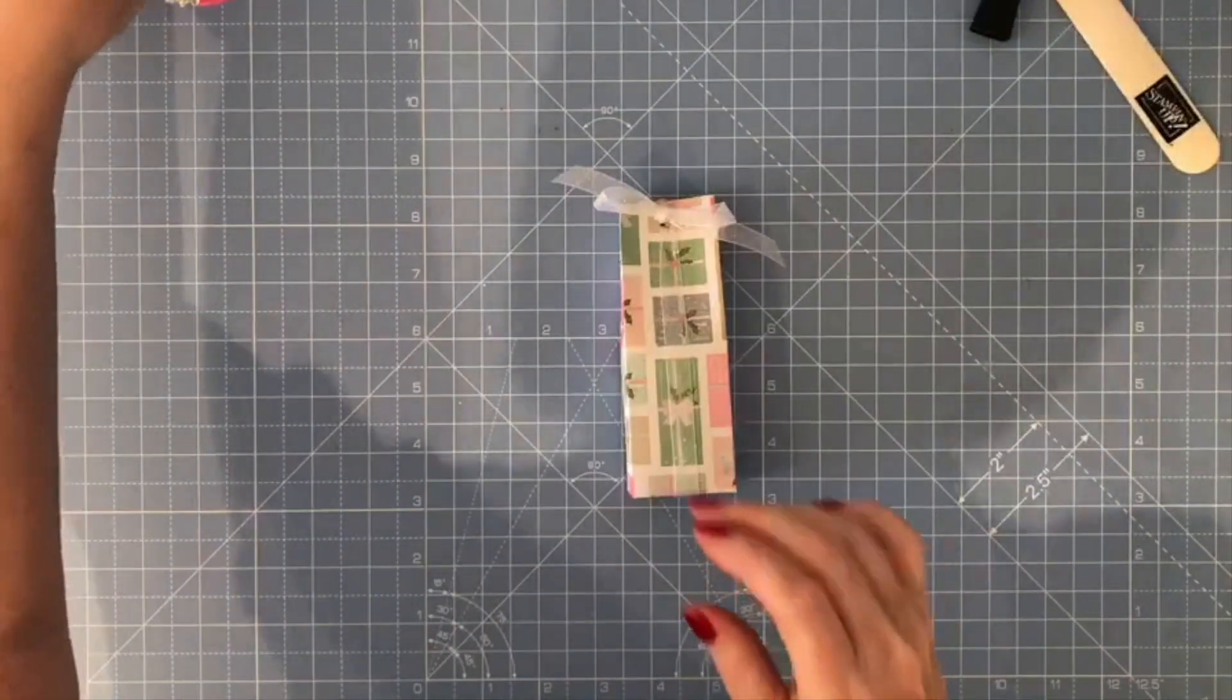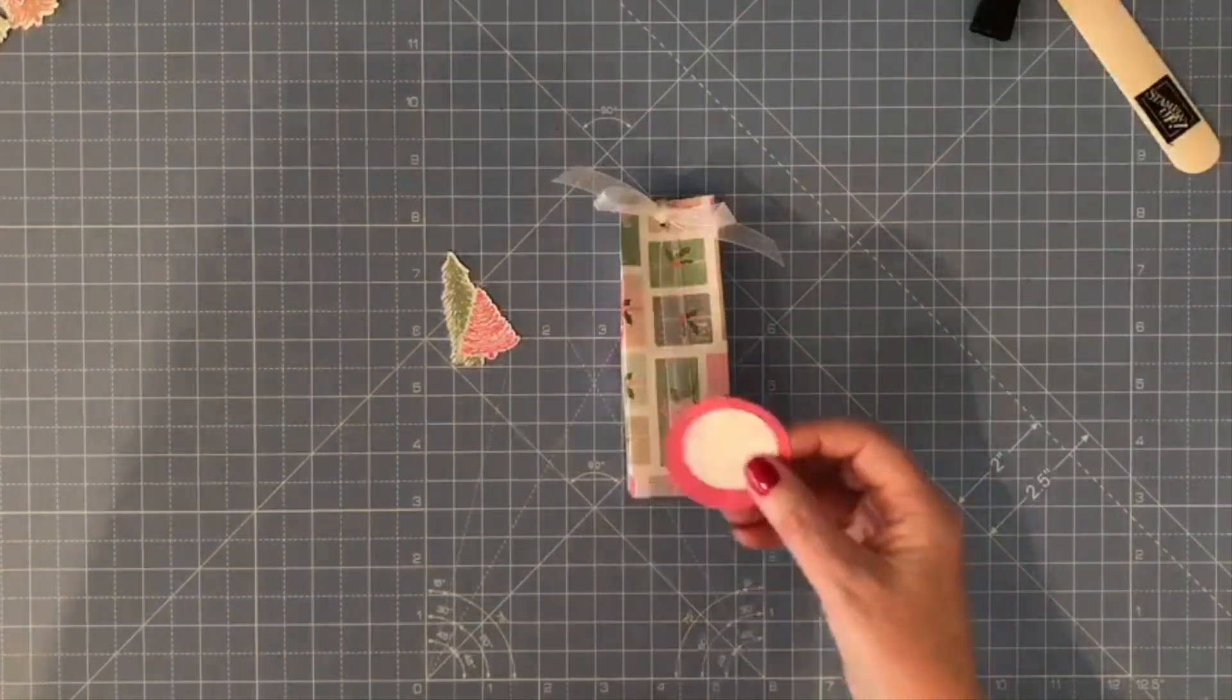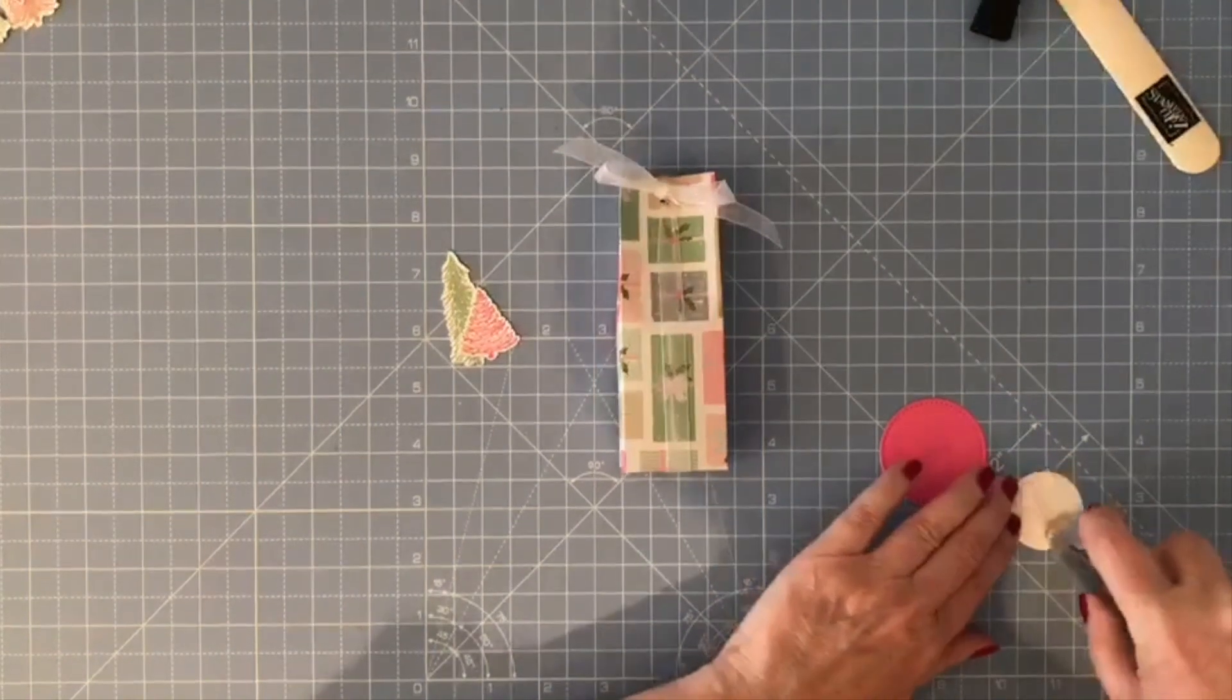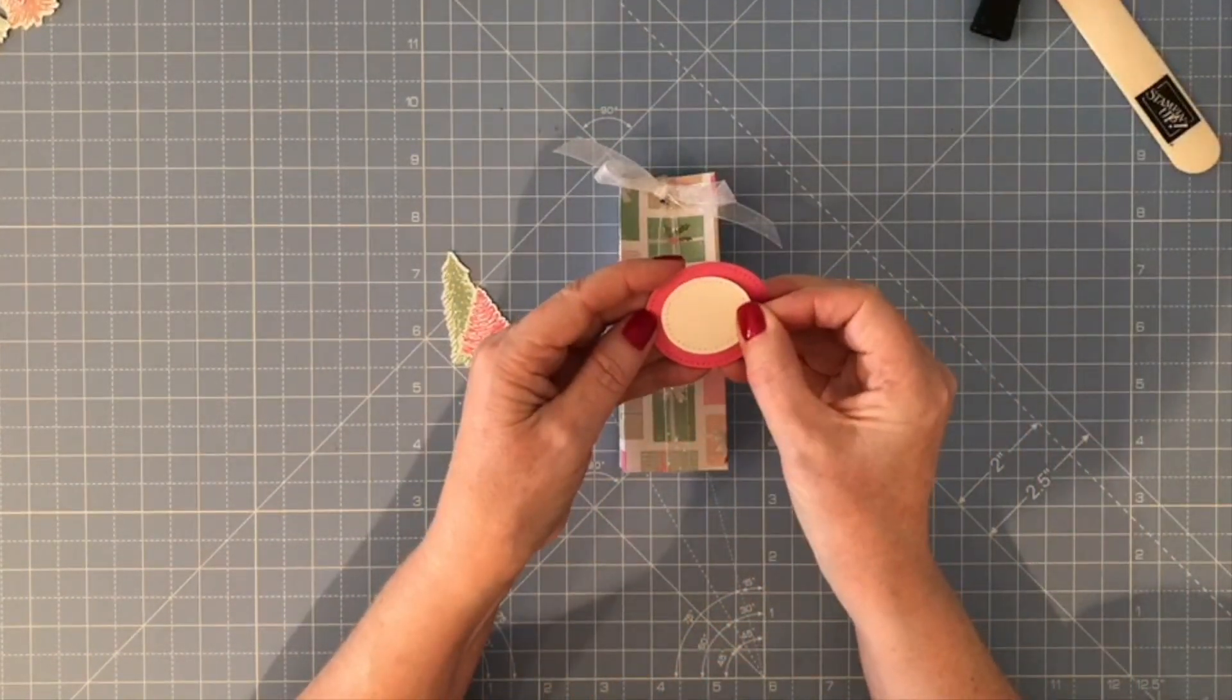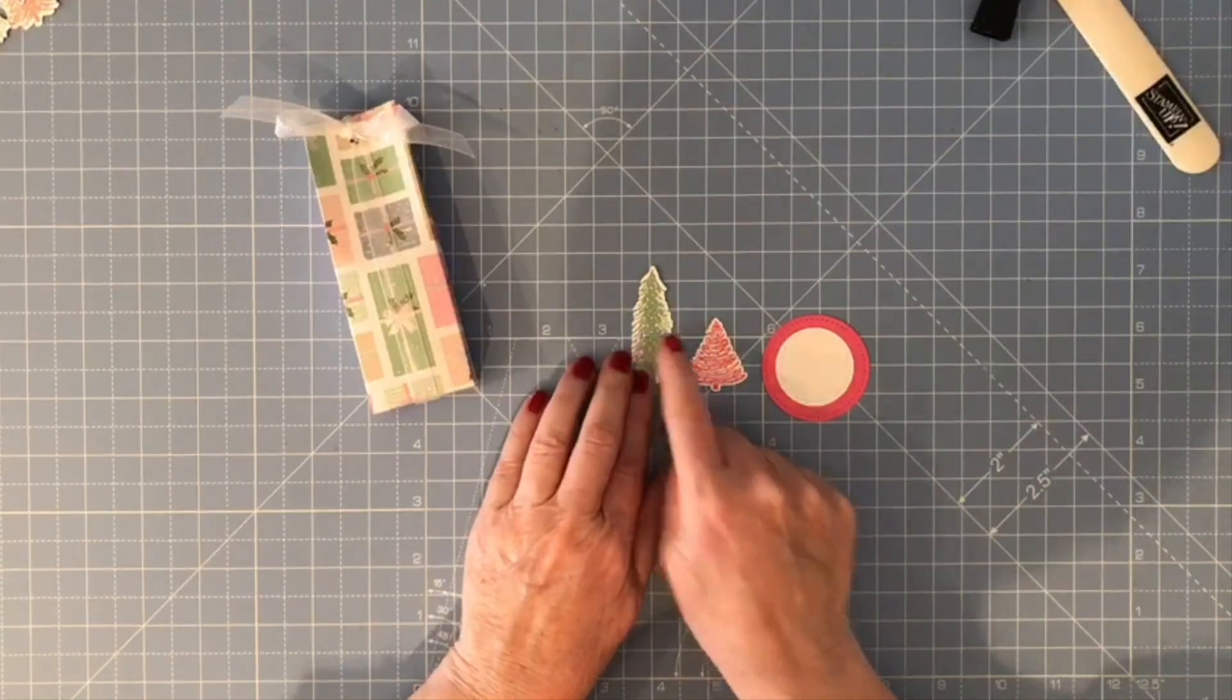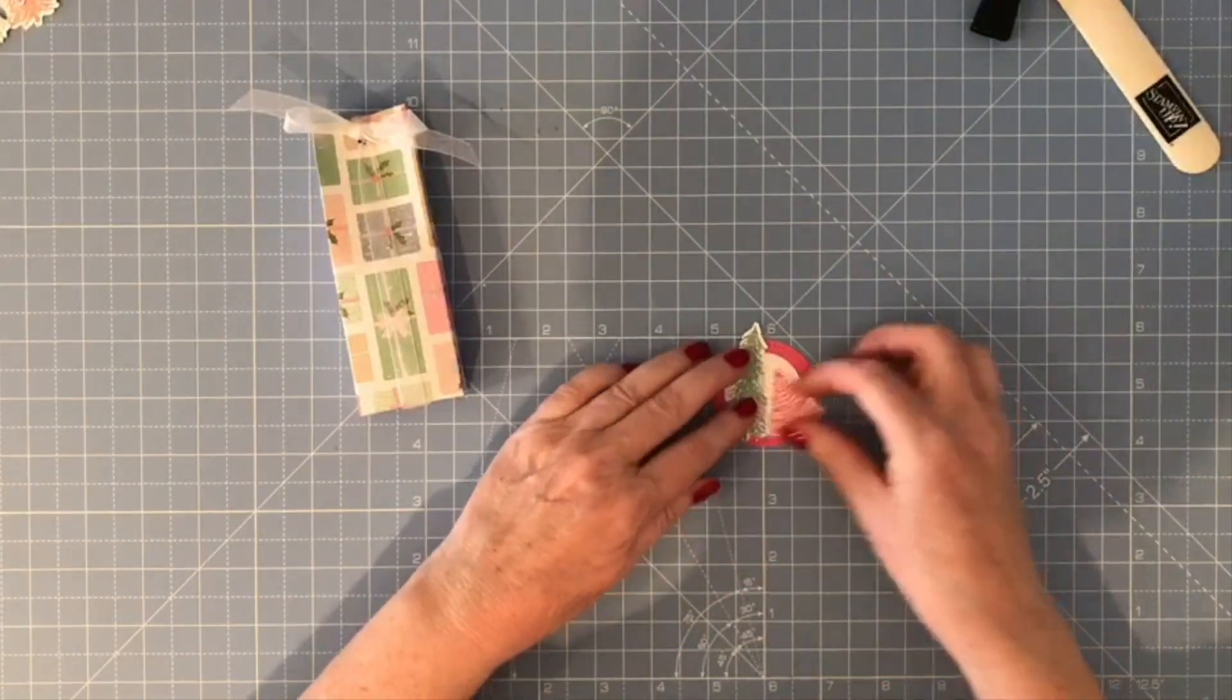Then just to decorate, I have cut a stitched circle in Polished Pink and a stitched circle in Basic White, because Polished Pink is one of the colors in the paper. I'm just going to layer these up.